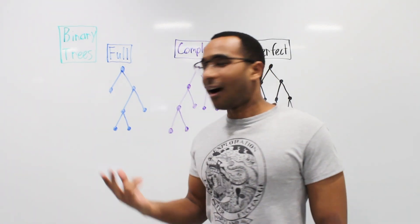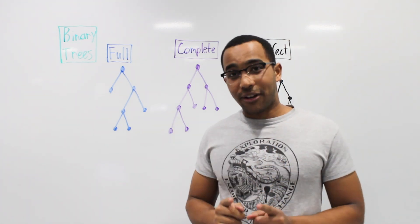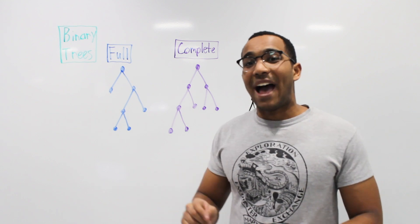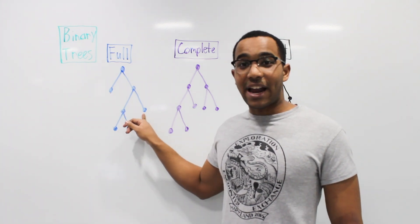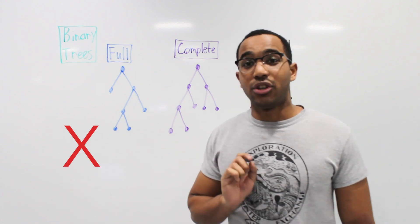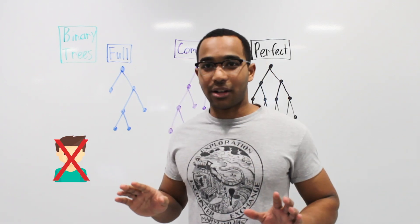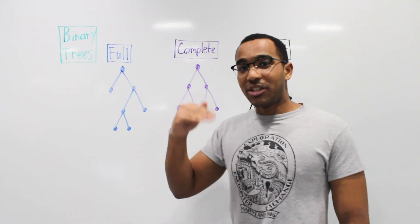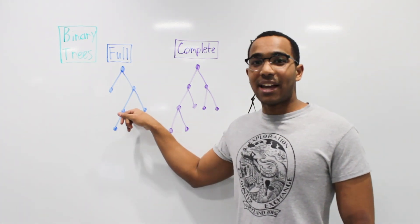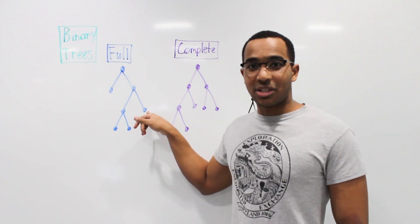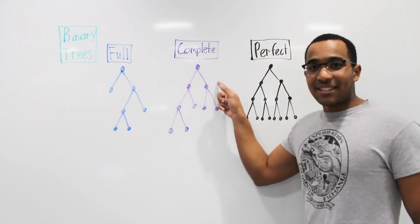Let's go over three key terms we can use to describe a tree. If we have a tree where leaf nodes have no children or a node has two children, it is a full tree. The leaf nodes have no children, and nodes that do have children must have exactly two — they cannot have one. So this tree is full. Every time we decide to have a descendant, we have to have two descendants.